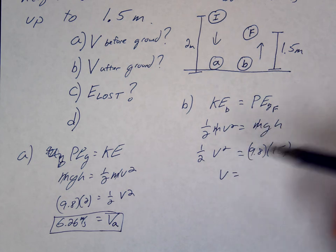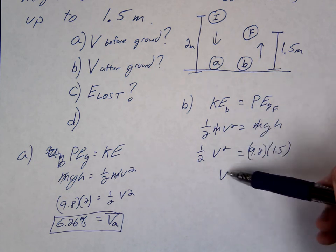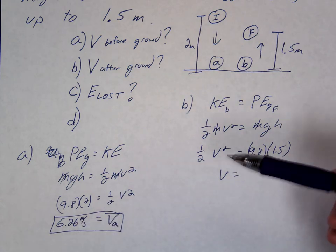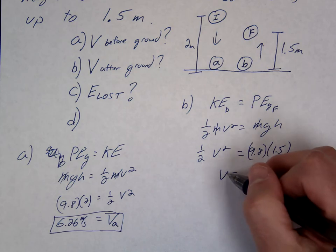Now we'll know we probably did it right because what should be true about this V compared to this V? It should be less, right? It's not going as high, we're losing some energy, the V should be less.